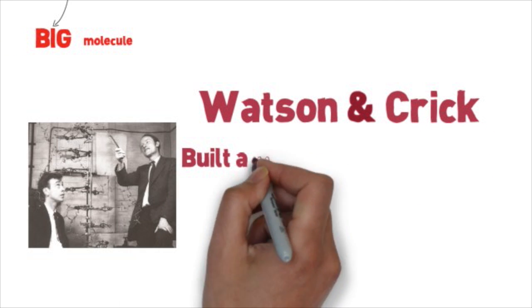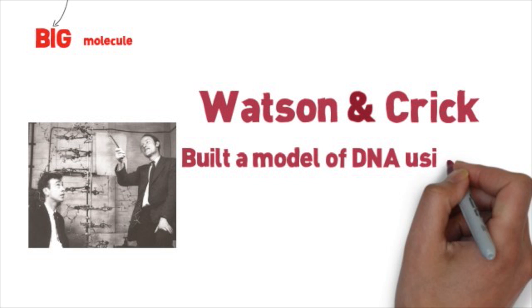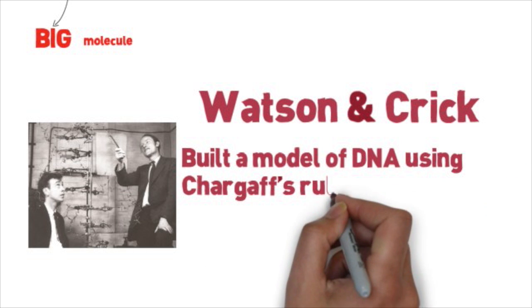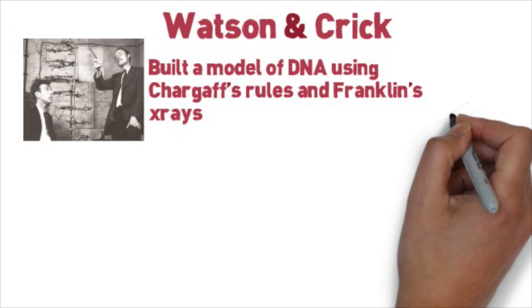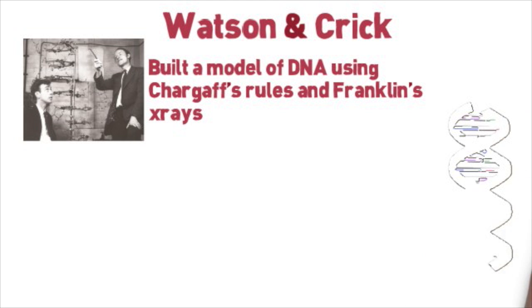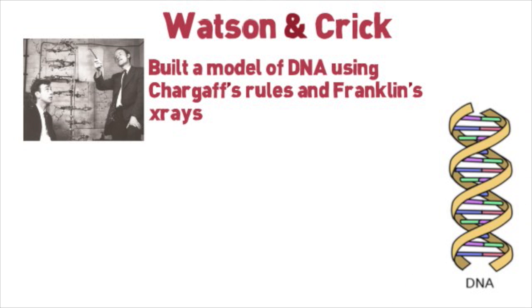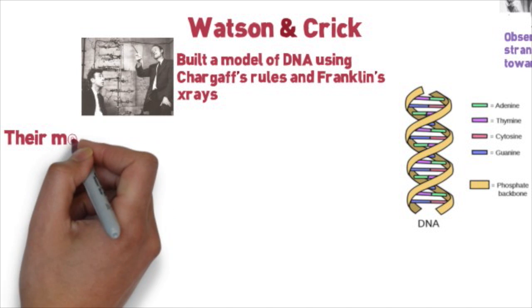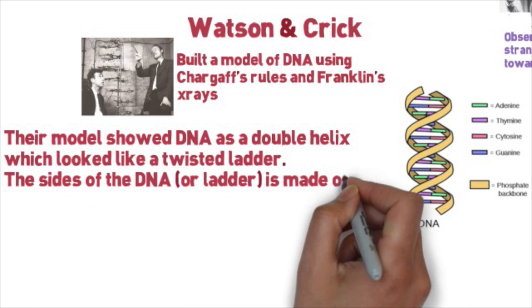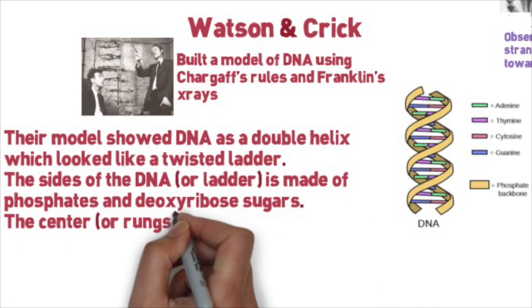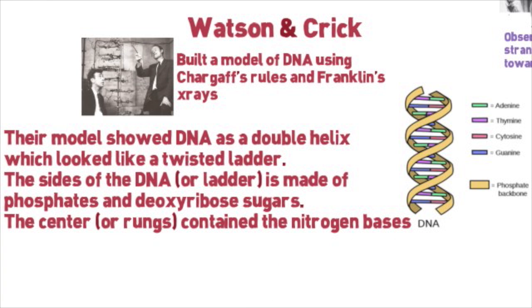Two scientists, James Watson and Francis Crick, used Chargaff's rules and Rosalind Franklin's x-rays to build a model of DNA. Their models show DNA as a double helix, which look like a twisted ladder. The sides of the DNA or ladder is made of phosphates and sugars, and the center or rungs contain the nitrogen bases.